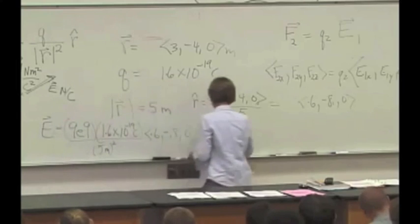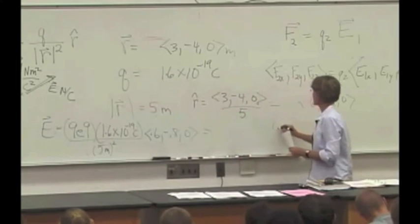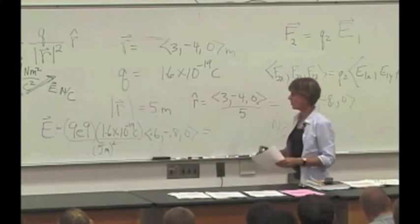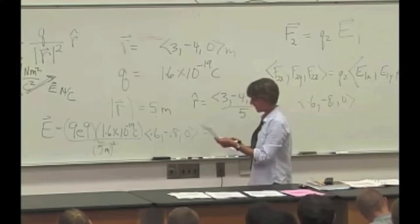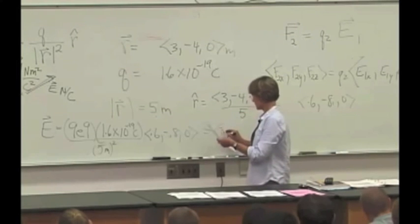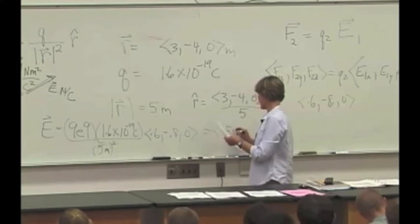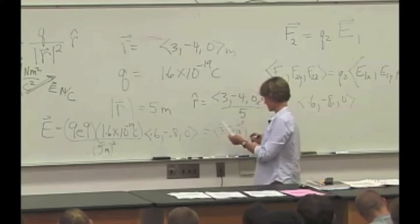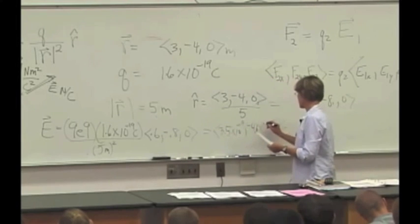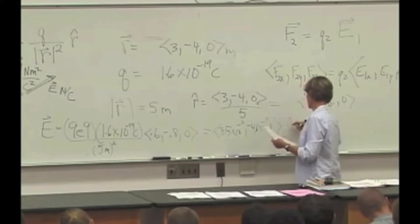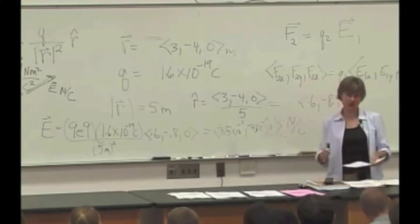And it comes out to be some number in newtons per Coulombs. And what I actually get is 3.5 times 10 to the minus 11, negative 4.6 times 10 to the minus 11, 0, newtons per Coulombs.